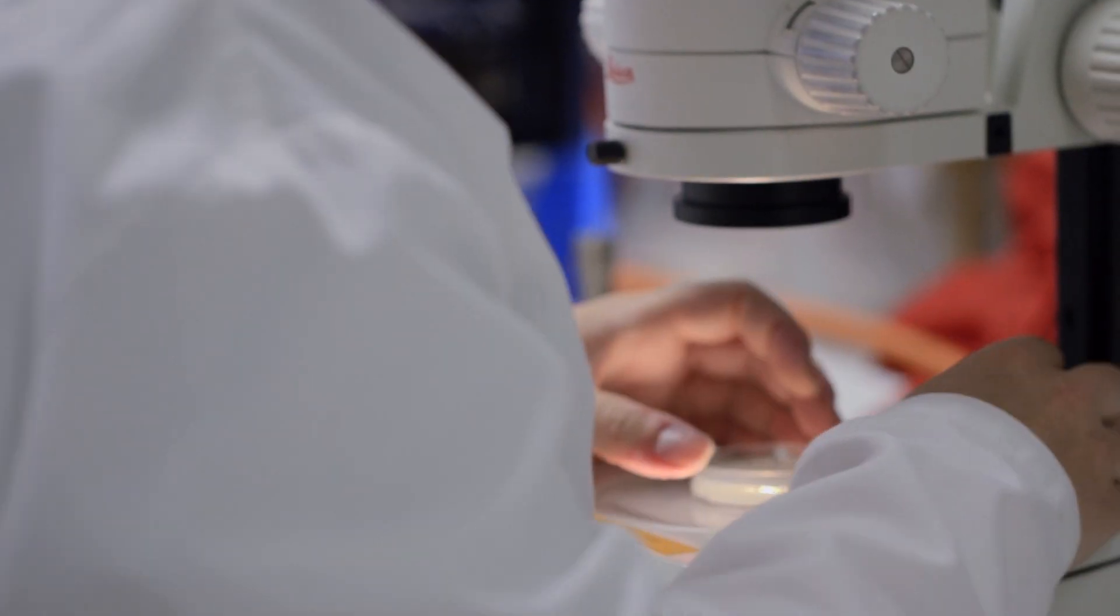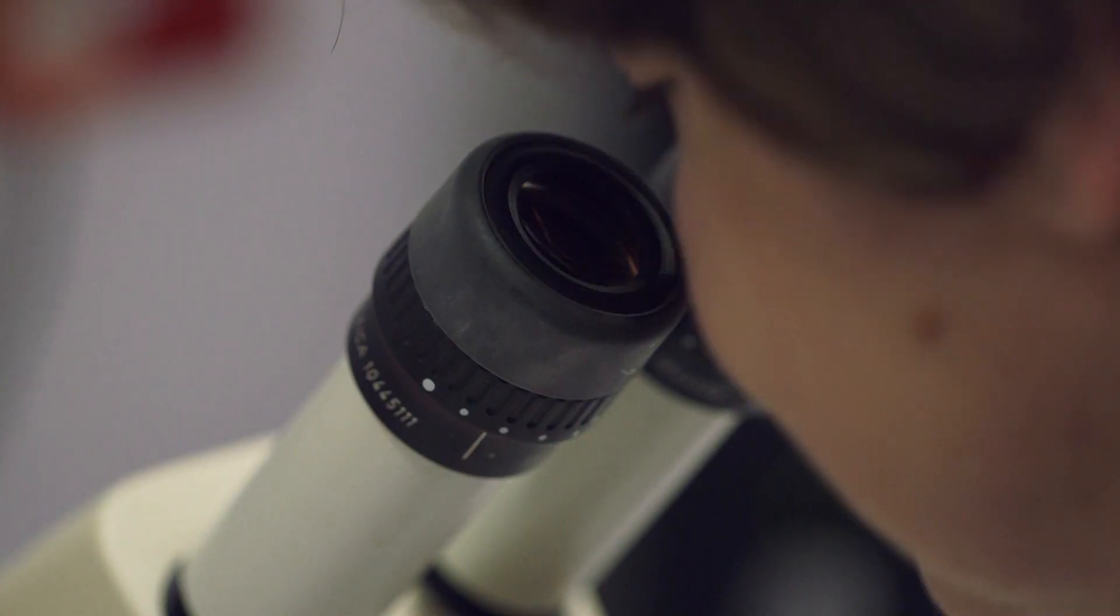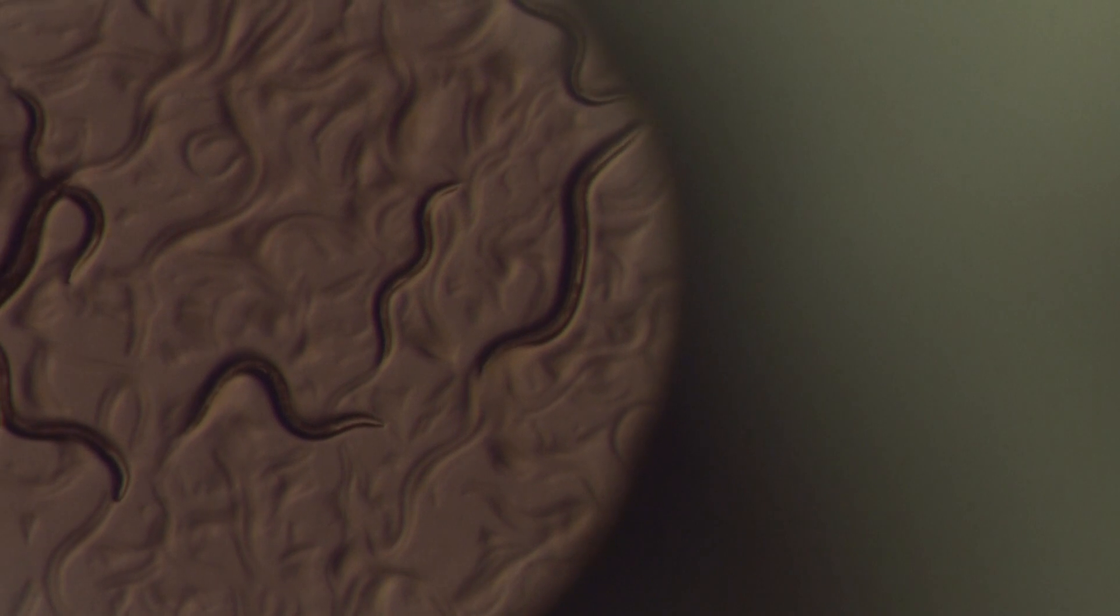We worked on a small nematode worm called C. elegans. It's an incredibly simple organism. It grows from an egg to an adult in three days. It's transparent and it only has a thousand cells in its whole body.